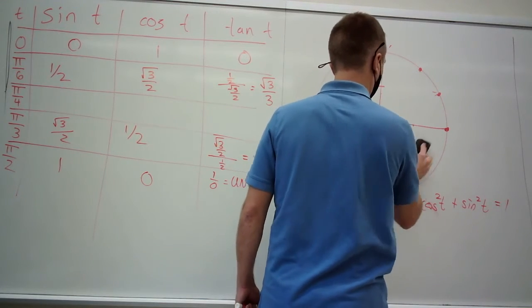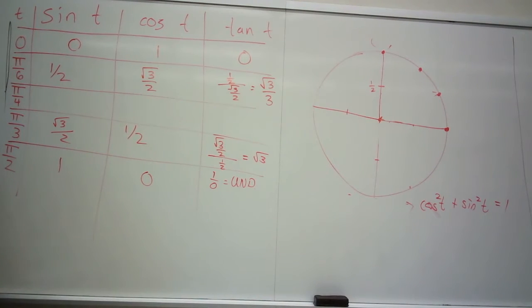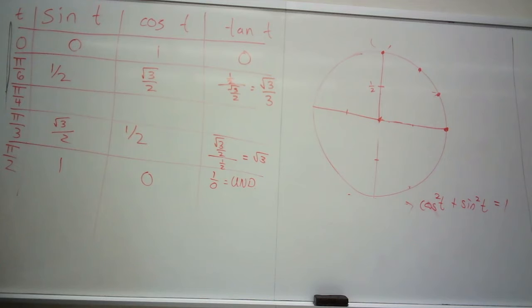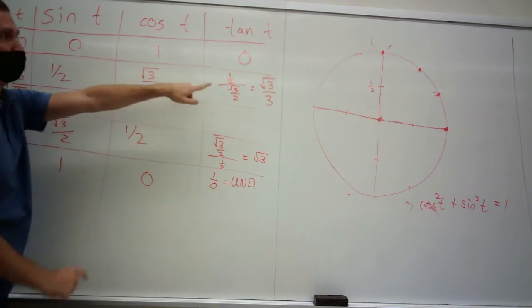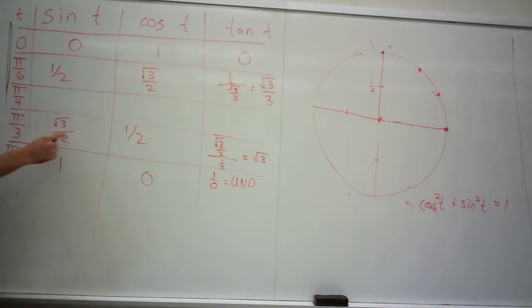I always told my pre-calc students, you really only need to memorize a couple things. You need to memorize these coordinates for those angles, but the other thing you have to memorize is these two values and the Pythagorean theorem. You don't really need to know much else. If you know sine of π/6 is 1/2 and the Pythagorean theorem, then you can compute everything. This number attached with this function - sine of π/6 is 1/2 - those are critical things to memorize.